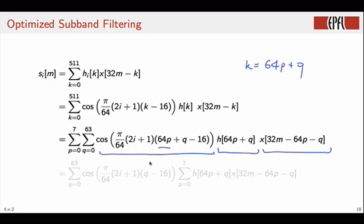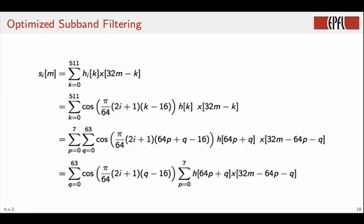The trick allows us to simplify one of the terms in the modulating factor, because this and this will multiply out to a multiple of pi, and so we can eliminate that. And we have a simplified expression that looks like so. An outside sum here that only involves the cosine modulation, and an inner sum here, which is a pre-subsampled implementation of the filtering operation.